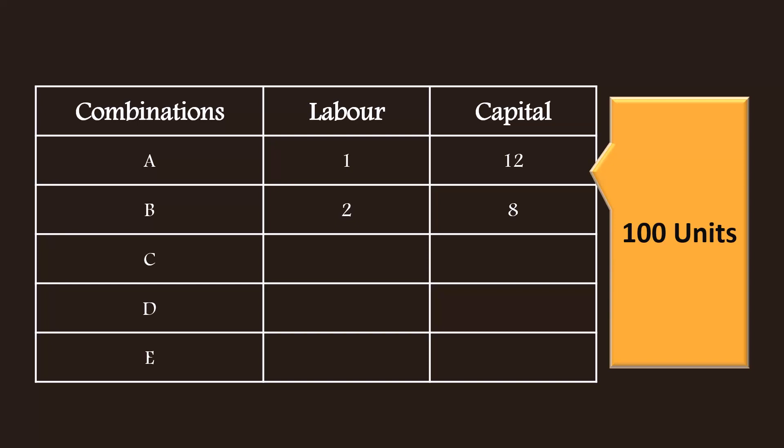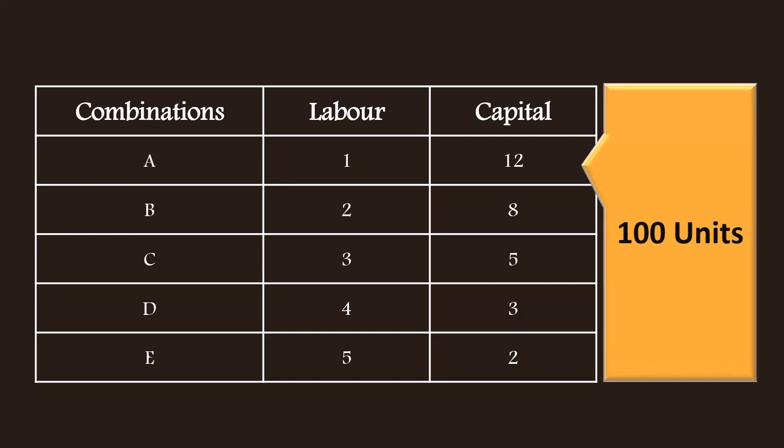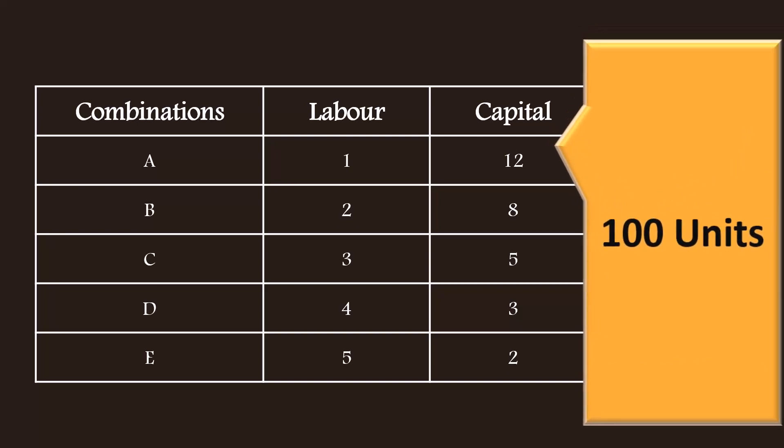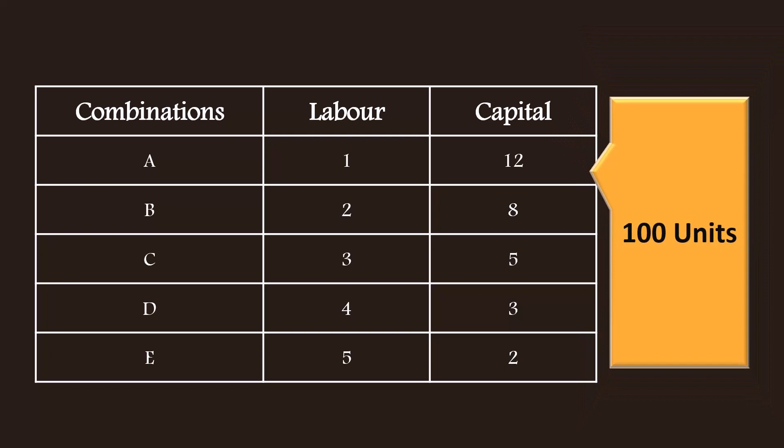Similarly, combinations C, D and E comprise of 3 units of labor and 5 units of capital, 4 units of labor and 3 units of capital, and 5 units of labor and 2 units of capital respectively. All the combinations are capable of producing the same level of output, 100 units.